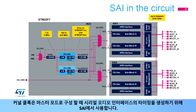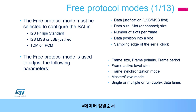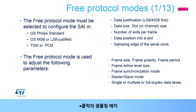The kernel clock is used by the SAI to generate the timing of the serial audio interface when configured in master mode. The free protocol mode allows the emulation of most common audio standard interfaces, thanks to the flexibility of changing several parameters such as data justification, data size and position, frame size, frame period, frame polarity, sampling edge for the clock, and number of slots.